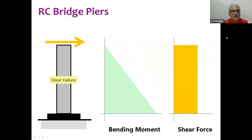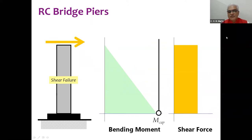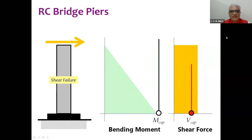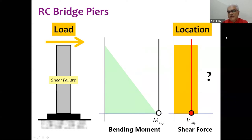In shear failure, the moment capacity is chosen to be very large, so moment is not the limiting factor — shear is. What is interesting is that we know the load, but we don't know the location when we have a shear force that is uniform and the design provides the same reinforcement across the height.